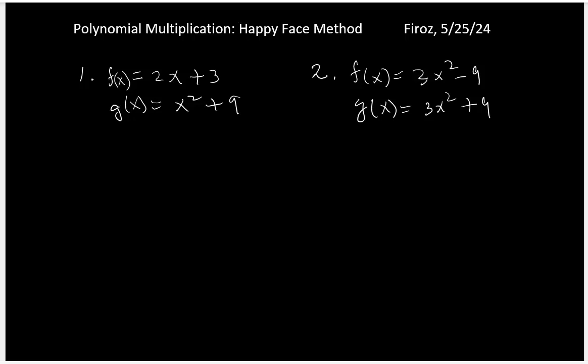For polynomial multiplication, we'll be using the happy face method, also known as the FOIL method. So if you have f(x) times g(x), this one is like (2x + 3) times (x² + 9).